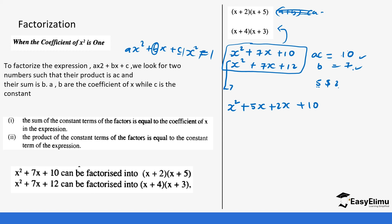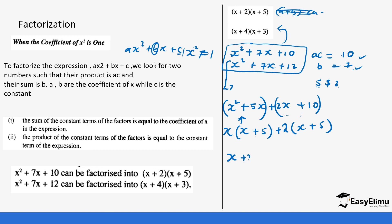After that we introduce brackets, grouping two expressions at a time. What is common in the first two terms is x, so we put x outside: x(x + 5). What is common in the last two terms is 2, so we get 2(x + 5). Notice the expressions inside the brackets are the same — if they are not the same, you have made an error. Then you pick the outside values (x + 2) and the repeated bracket (x + 5), giving the factorized form.